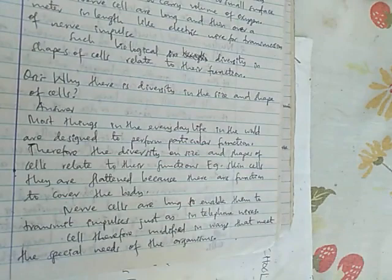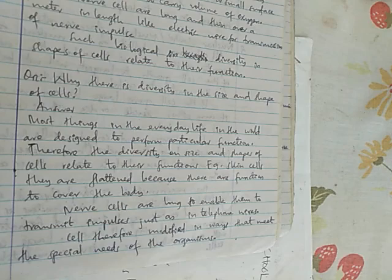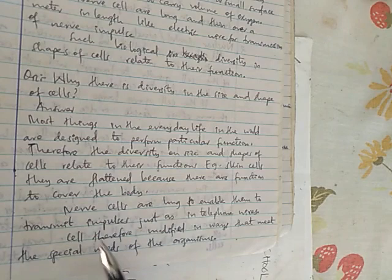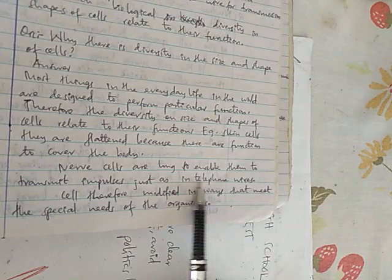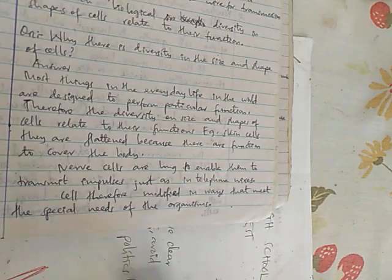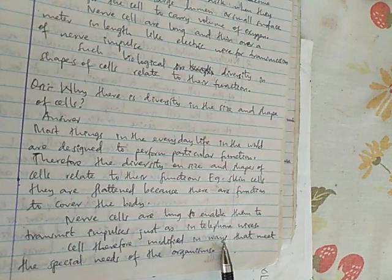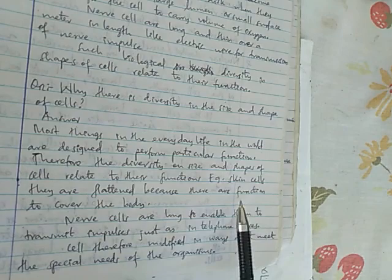Also, nerve cells are long and thin over a meter in length, like electric wire for transmission of nerve impulses. Nerve cells have this shape to adapt. So such biological diversity of shapes of cells relate to their function. They relate to their function. So the question might be, why there is diversity in size and shape of the cell? Why is there diversity? Why is there difference between size and shape of different cells? So the answer is that most things in everyday life in the world are designed to perform particular function. Or in short, you can say the diversity on size and shape of the cell relate to their function. And if you say it like that it's enough, but you should give examples. For example, skin cells, they are flattened because their function is to cover the body or to protect. But nerve cells are long to enable them to transmit impulses just as in telephone wires. Another example, in conclusion, another example is red blood cells lose nucleus and become biconcave so as to carry enough amount of oxygen. So in conclusion, cells therefore modifies in ways that meet the specific needs of the organism. So in short, the short answer is like that.